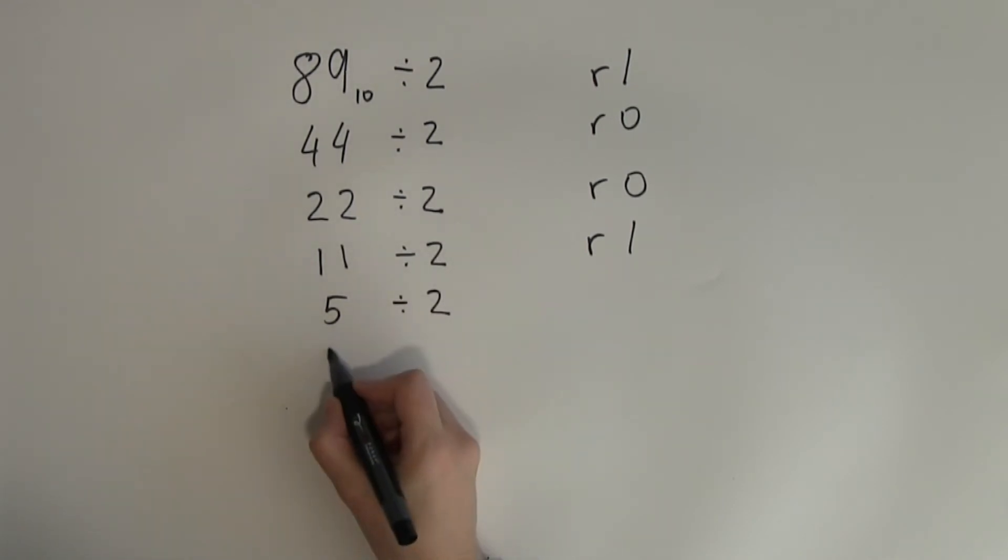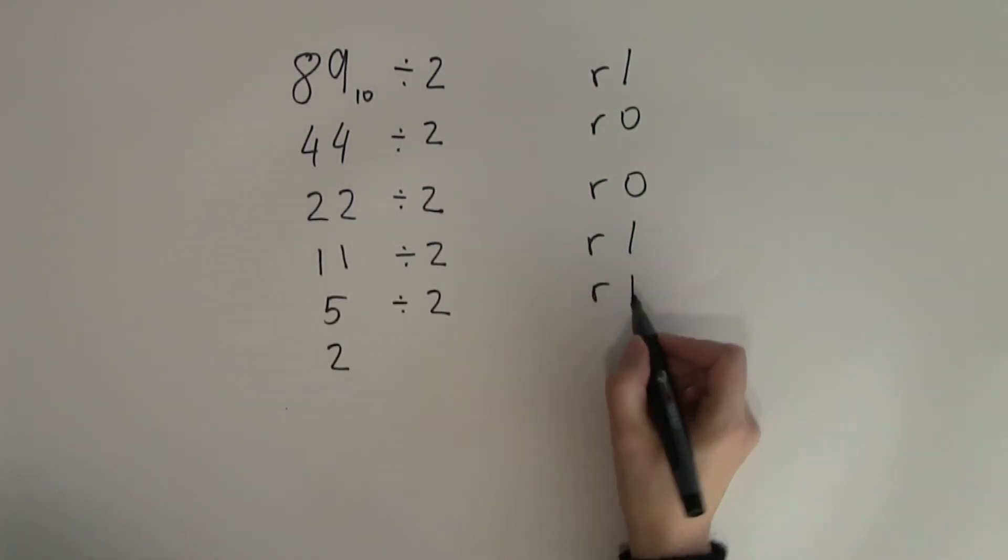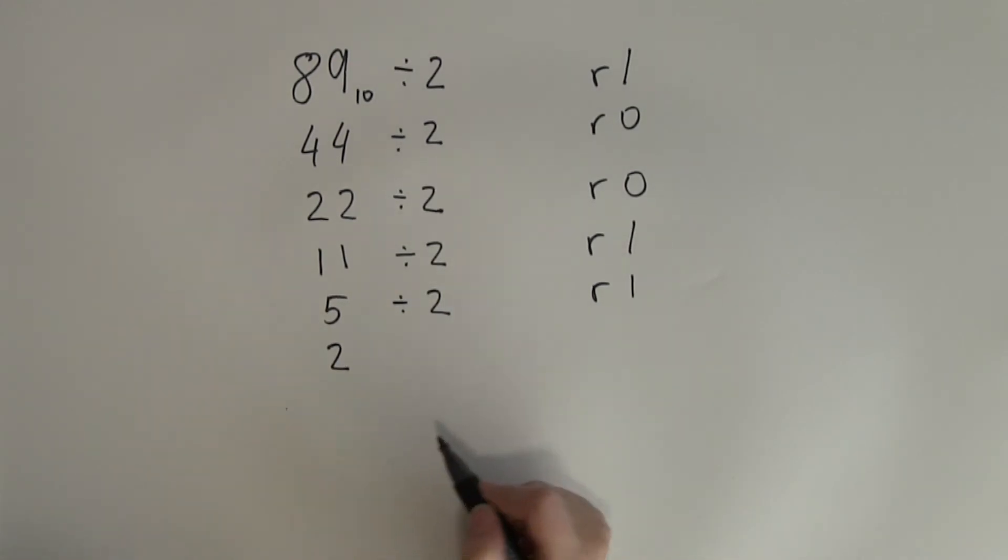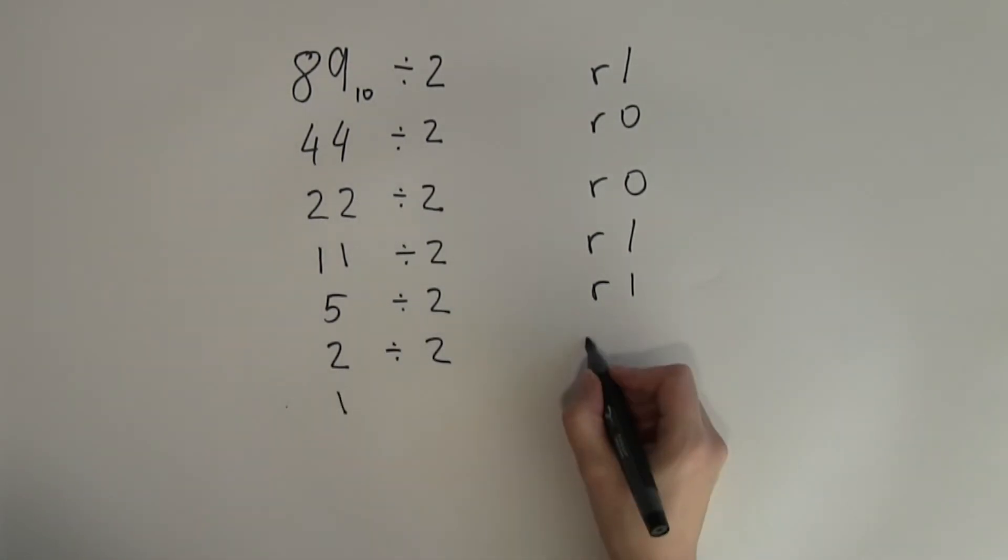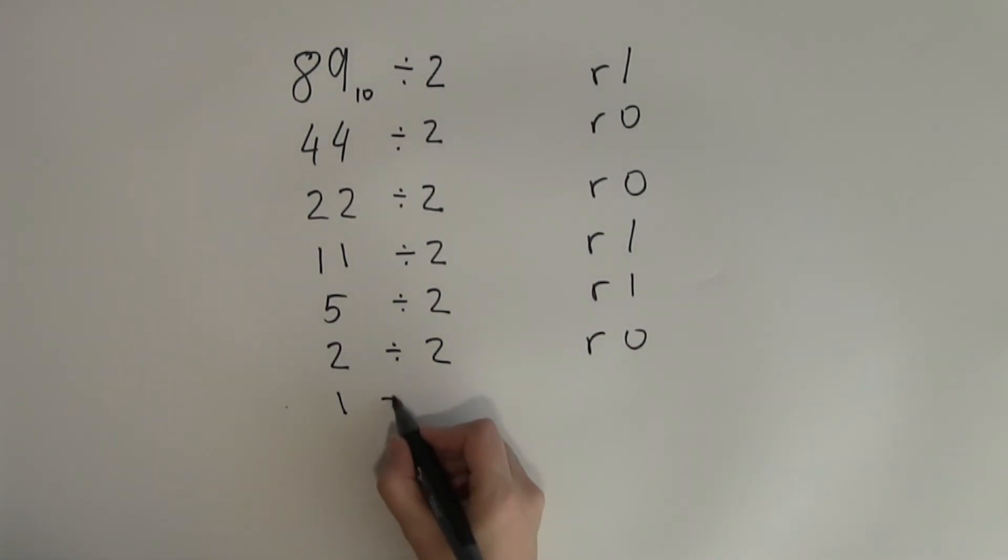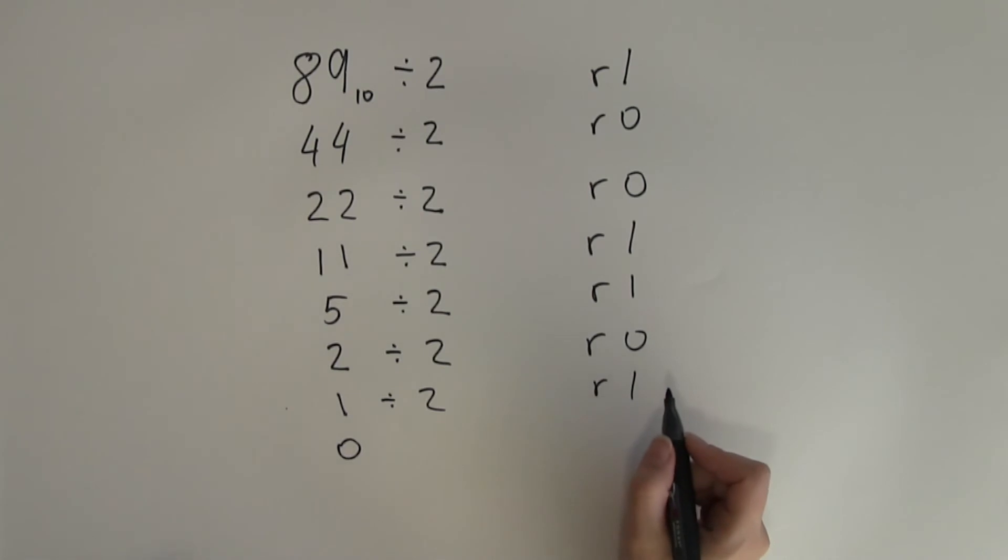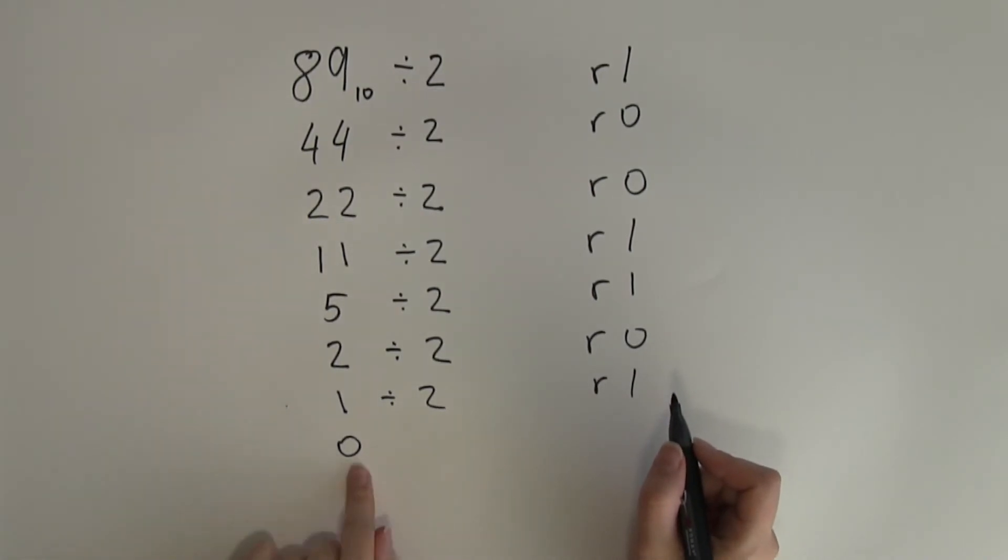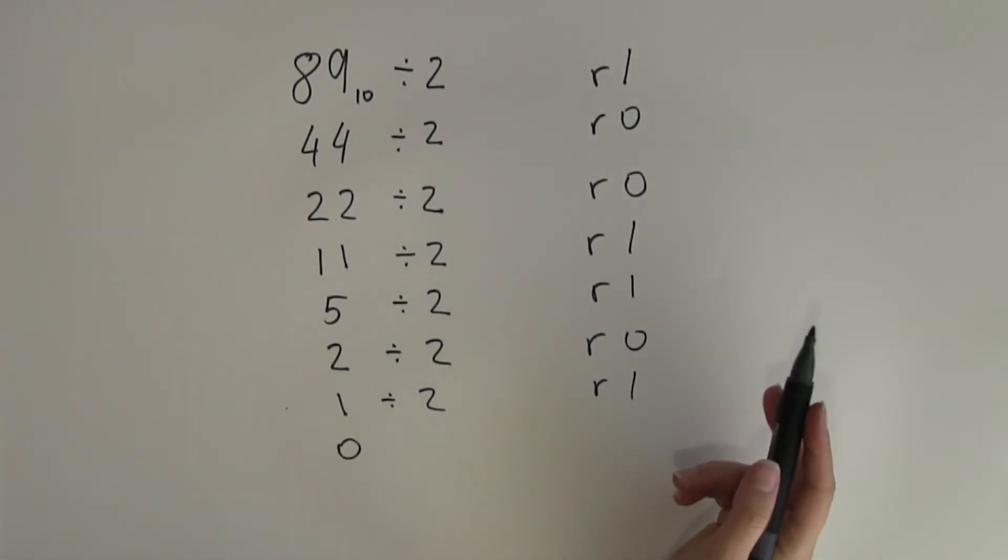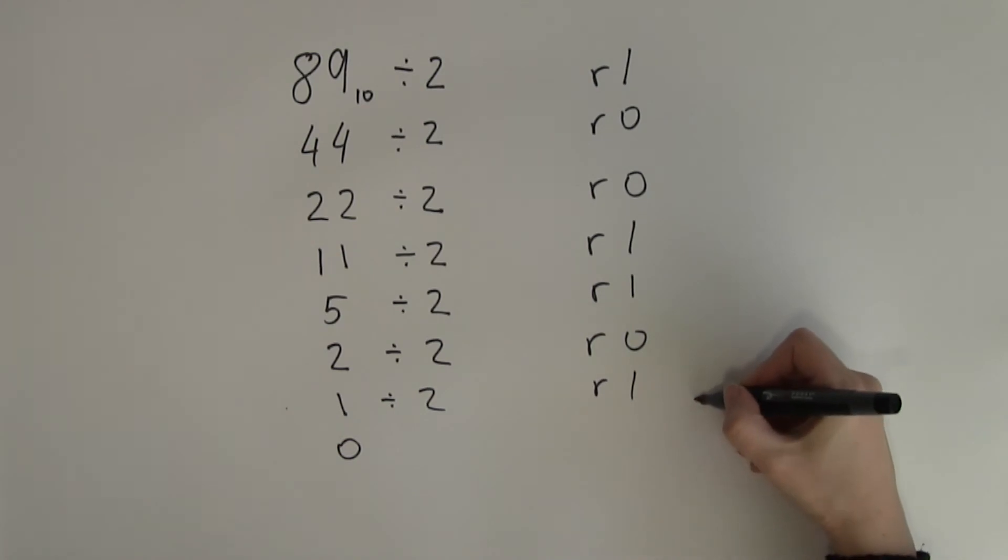5 divided by 2 is 2 remainder 1 because 2 times 2 is 4 plus 1 makes 5. 2 divided by 2 is 1 no remainder and 1 divided by 2 is 0 with 1 remainder. Remember I need to finish up with this 0 here and again I need to copy the digits bottom up.